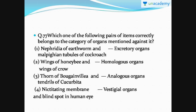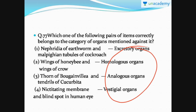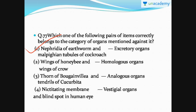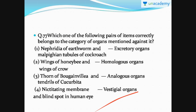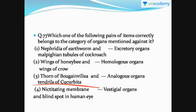The next question: you have to tell which option is correct in the pair of items correctly matching with the category of organ given. The right answer is option number one — nephridia of earthworm and Malpighian tubules of cockroach are excretory organs. The rest of the three options are wrong: wings of honeybee and wings of crow are analogous organs; thorns of Bougainvillea and tendrils of Cucurbita are homologous organs.